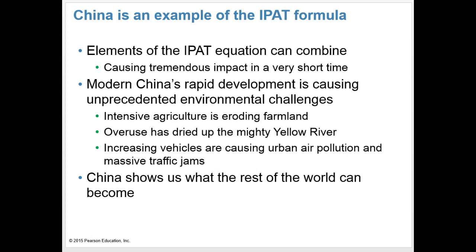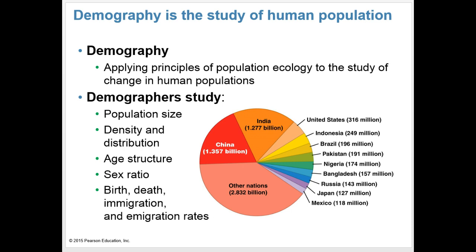China is a window into what much of the rest of the world could soon become. Modern China's rapid development is causing unprecedented environmental challenges. Intensive agriculture is eroding their farmland. Overuse of water from the Yellow River is drying up parts of it, and they're pumping out water from their aquifers and drying those up. Increasing numbers of vehicles cause more urban air pollution and massive traffic jams.